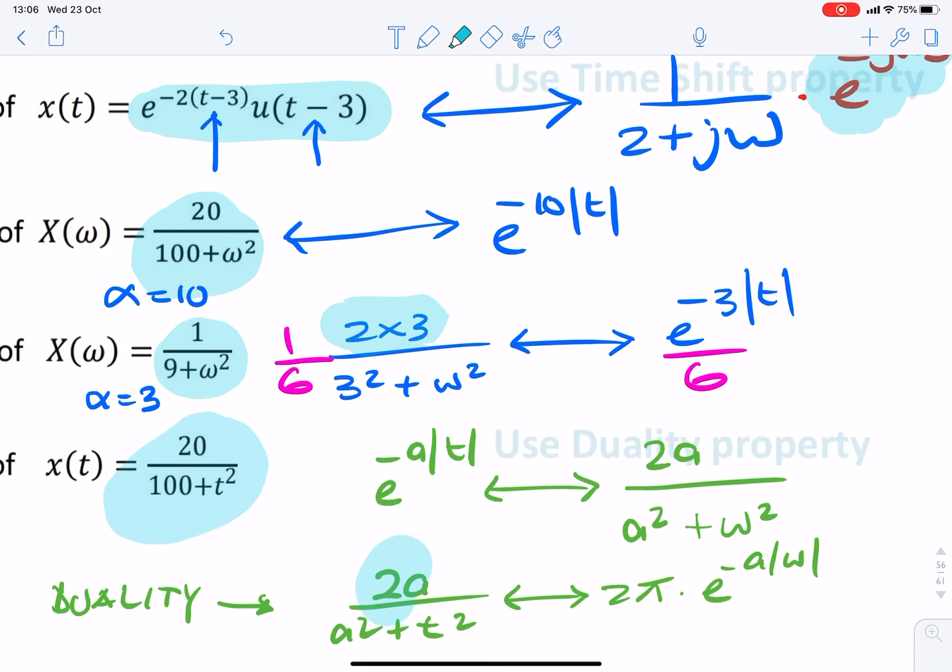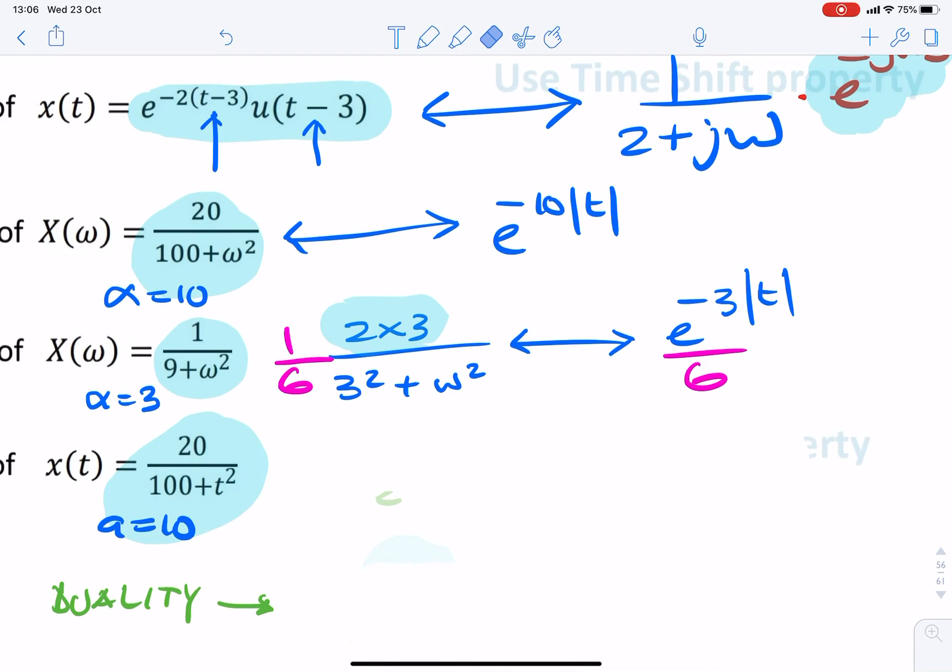And if you look closely, that's exactly what we have. We have in the actual question, we have 2a over a squared plus t squared with a equals 10. So I can say a equals 10. And then I can write the answer as 2pi times e to the minus 10 absolute value of omega.